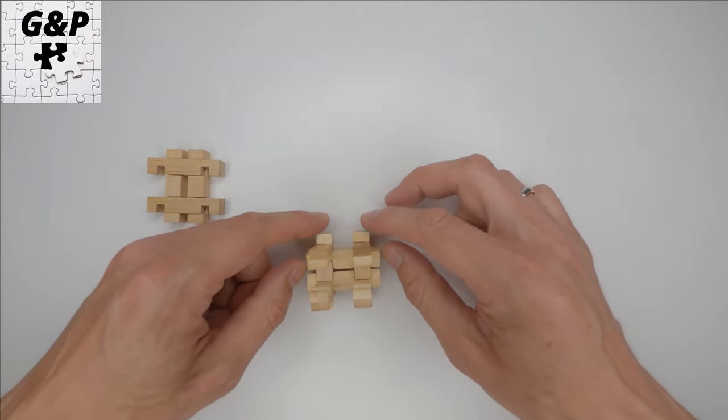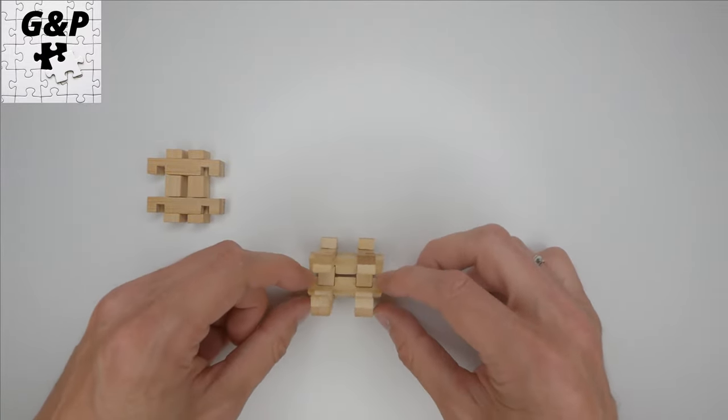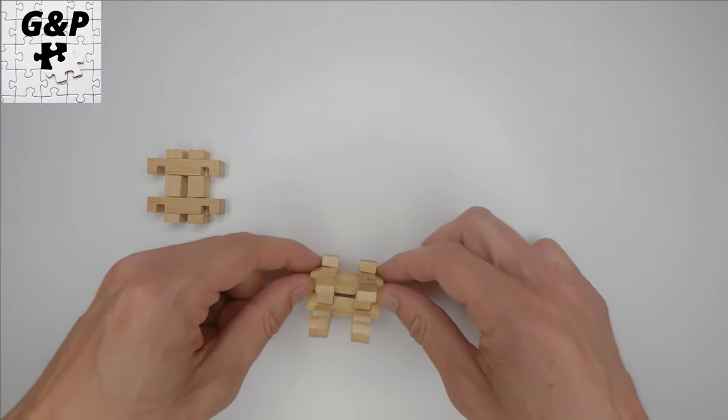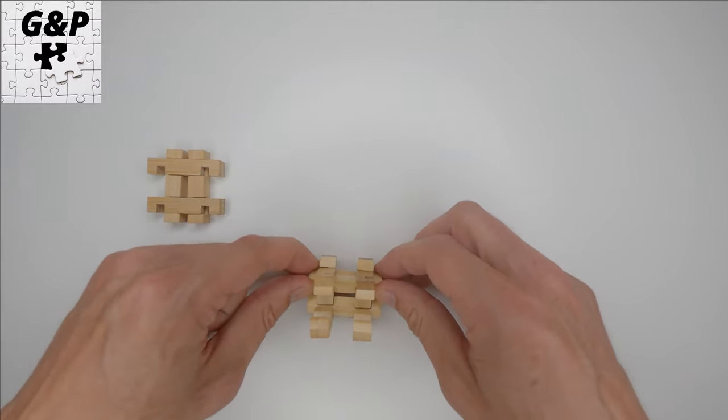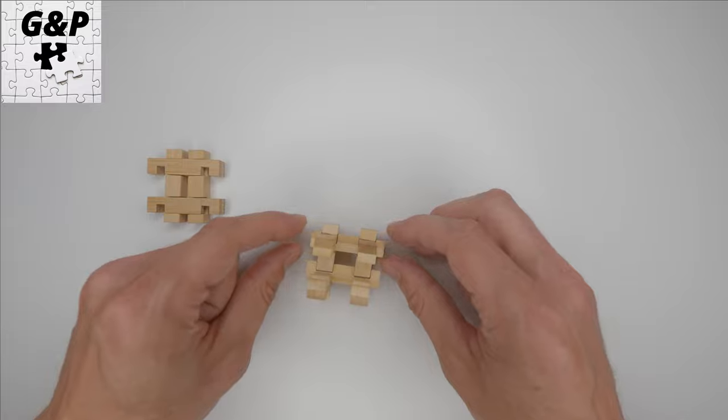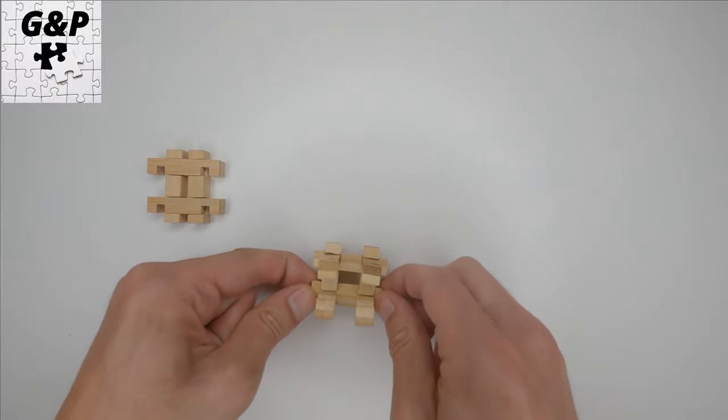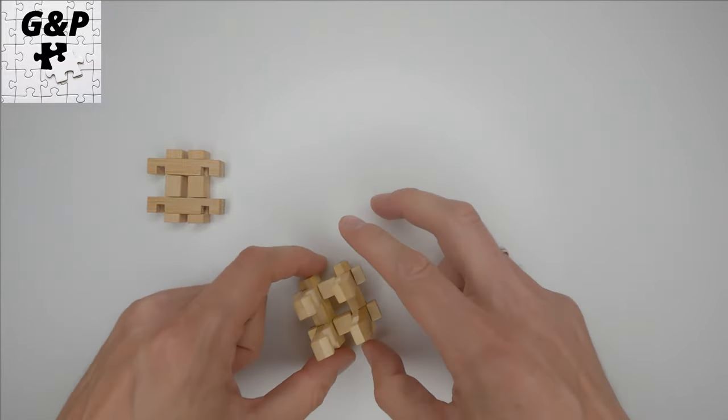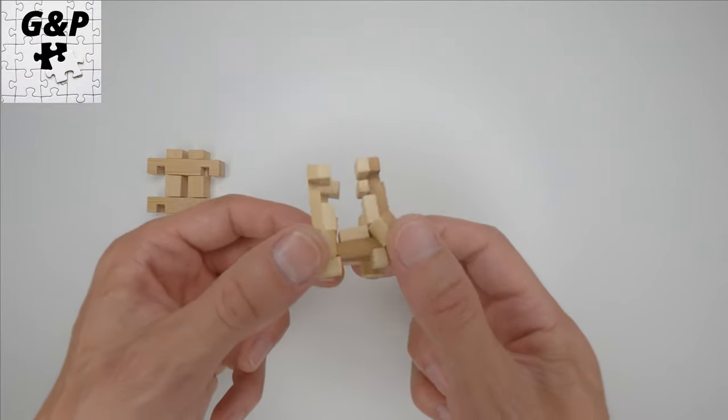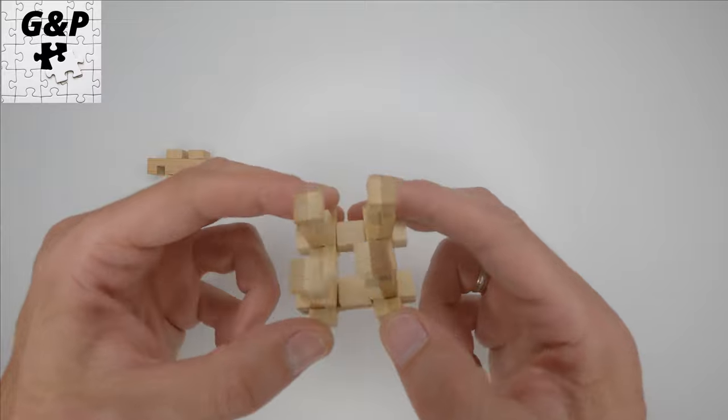So we've done it, and now what we're going to do, we're going to lock it by just spinning these two bottom parts. And as you can see, our first set of parts is actually locked.